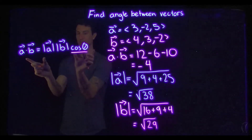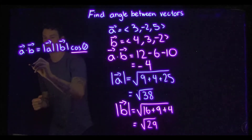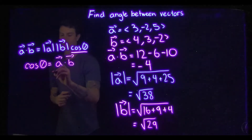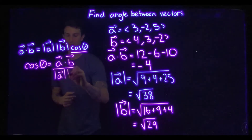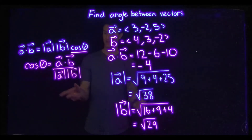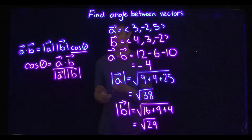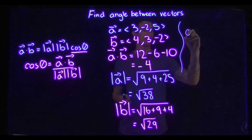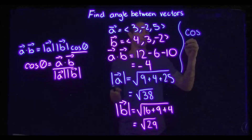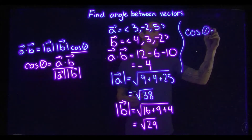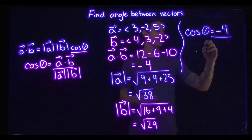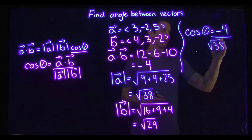Let's do some algebra: we're going to keep cosine of theta on one side and move the magnitudes to the other side, so cosine of theta equals a dot b divided by the magnitude of a times the magnitude of b. We have all the information to calculate cosine of theta — it's going to be an ugly calculation requiring a calculator. Cosine of theta equals negative four divided by the square root of 38 times the square root of 29.